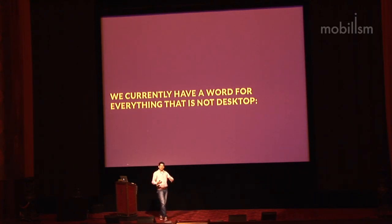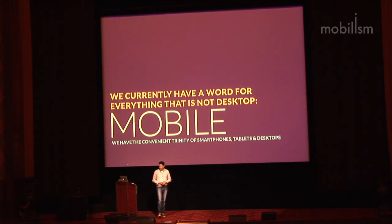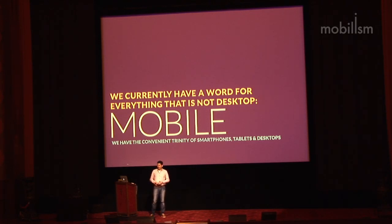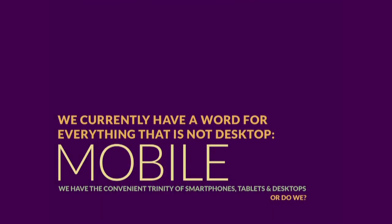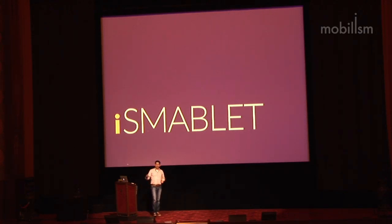We have this word for everything that's not desktop — mobile. We have smartphones, tablets, and desktops, but yesterday we heard about televisions, today we heard about toasters. We have all these things like refrigerators, and the Smablet — or Apple's version of it. We don't know what's going to happen. So when we want to make stuff now, not knowing what will happen in the future, we have to consider HTML — structured HTML — as the base for everything we're going to do.